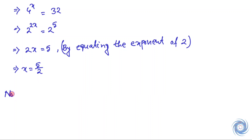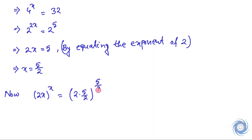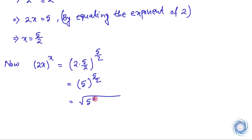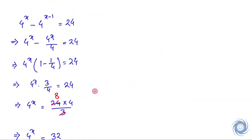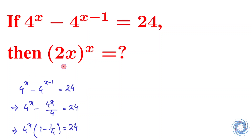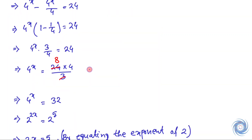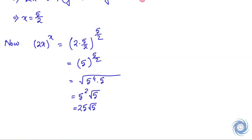Now, 2x whole to the power x is equal to — therefore the value of 2x whole to the power x is equal to 25 root 5. Here we are supposed to find the value of 2x whole to the power x, and the value is 25 root 5.